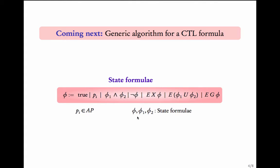However, the existential normal form also allows formulas like EX of EG, or E of EG(P1) until EG(P2), and things like this. So, given a generic formula in CTL existential normal form, how would you model check it? In other words, how would you find the states of the transition system that satisfy this formula?